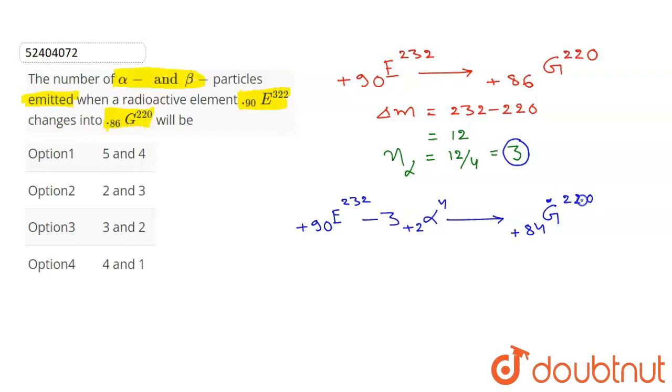यह 86 पर नहीं है, इसको 86 पर लाना है हमें, कैसे लाएंगे? हमें 2 unit positive charge बढ़ाना है, जिससे यह बढ़कर, 86 हो जाए.